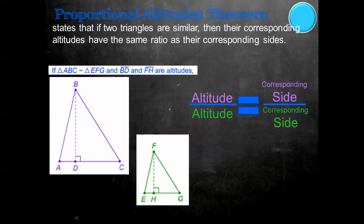We're going to talk about two theorems today. The first is the proportional altitudes theorem. It states that if two triangles are similar, then their corresponding altitudes have the same ratio as their corresponding sides — corresponding means it's in the same spot. For example, triangle ABC is similar to EFG, and BD and FH are both altitudes. So we can say BD over FH equals a corresponding side over corresponding side, like BC over FG, or BA over FE.